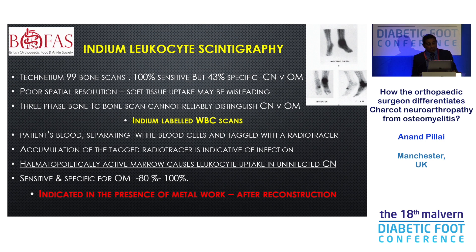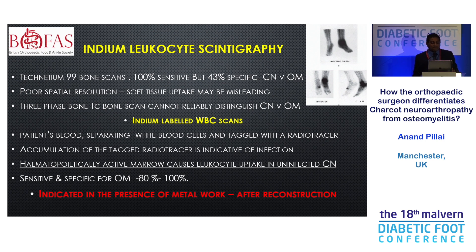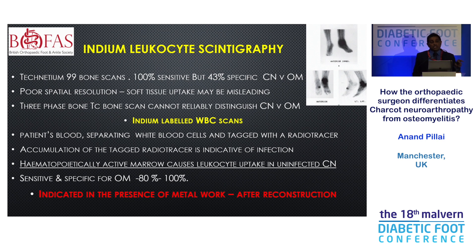Regarding bone scans: technetium bone scans, traditionally used for orthopaedic purposes including tumours, are not very useful here because both osteomyelitis and Charcot neuroarthropathy will give you increased uptake. However, indium-labelled white cell scans are very specific for infection and help distinguish it from other bone scan findings. This is quite useful in my practice when somebody has metalwork — if you're concerned about possible infection and MRI is not feasible, a WBC scan is quite good. But be aware there have been occasions where Charcot neuroarthropathy gives false positives — it's not always infallible.